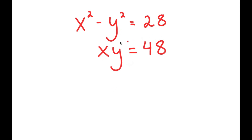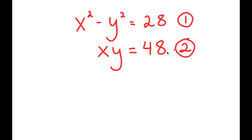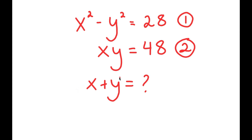In this system of equations, I have x squared minus y squared is equal to 28, and x times y equals 48. Let's call this equation 1 and equation 2. What I want to do is find the value of x plus y, which is very simple once we find the values of x and y.